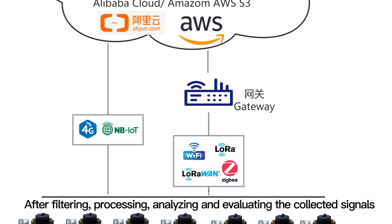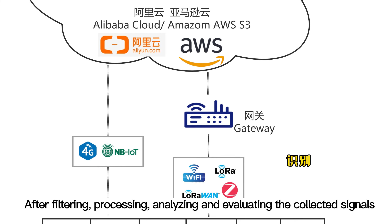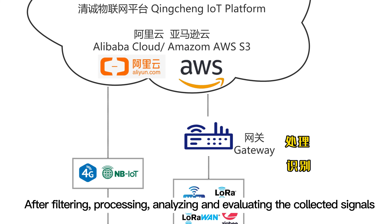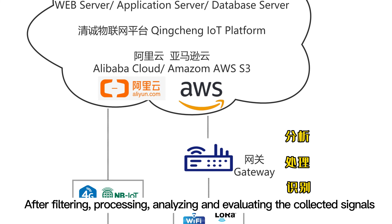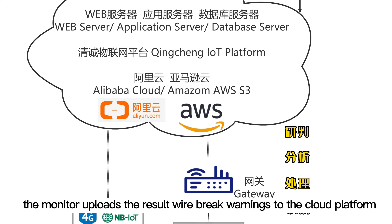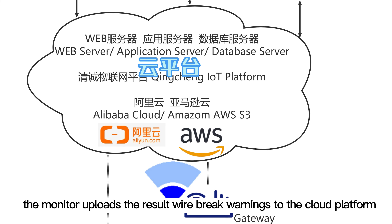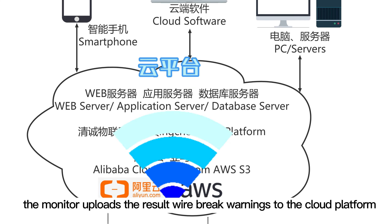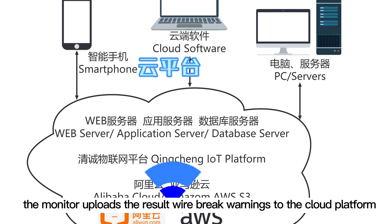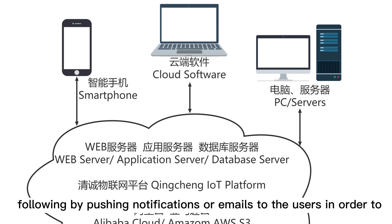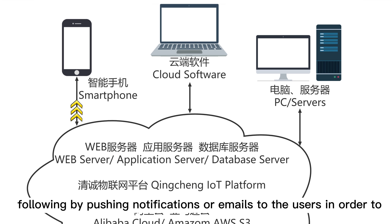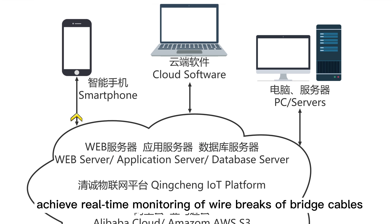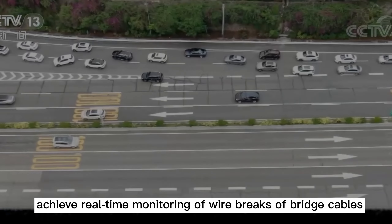The sensor converts the signal into an electrical signal and transmits it to the acoustic emission monitor. After filtering, processing, analyzing, and evaluating the collected signals, the monitor uploads wire break warnings to the cloud platform, followed by pushing notifications or emails to users in order to achieve real-time monitoring of wire breaks of bridge cables.